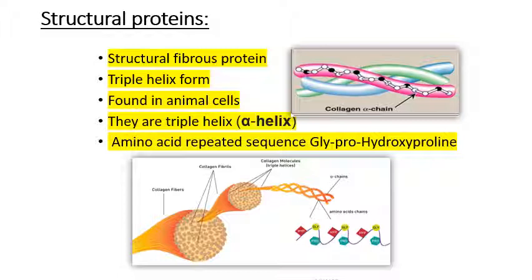The structural proteins are fibrous proteins and they have an alpha-helical chain which combines with each other to form a triple helical structure. They are found in abundance in animal cells.